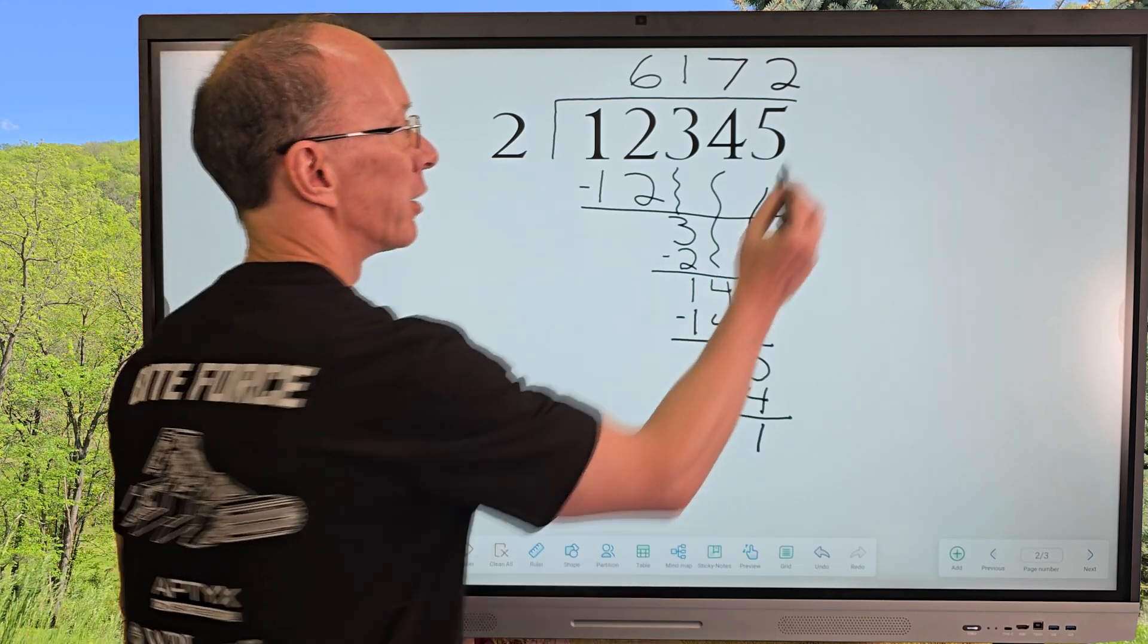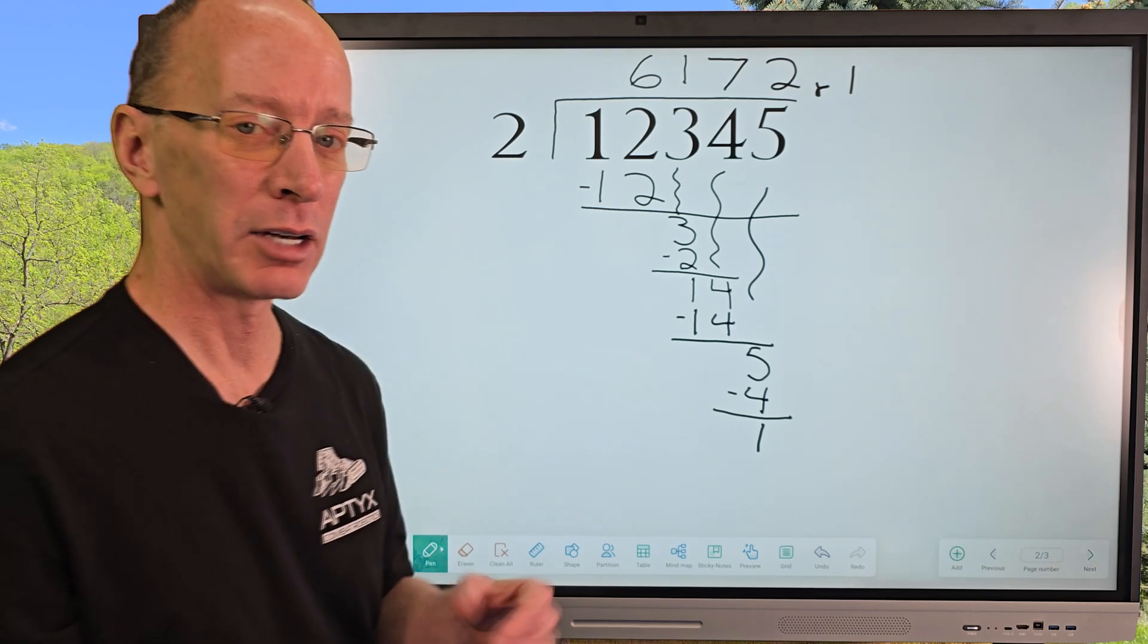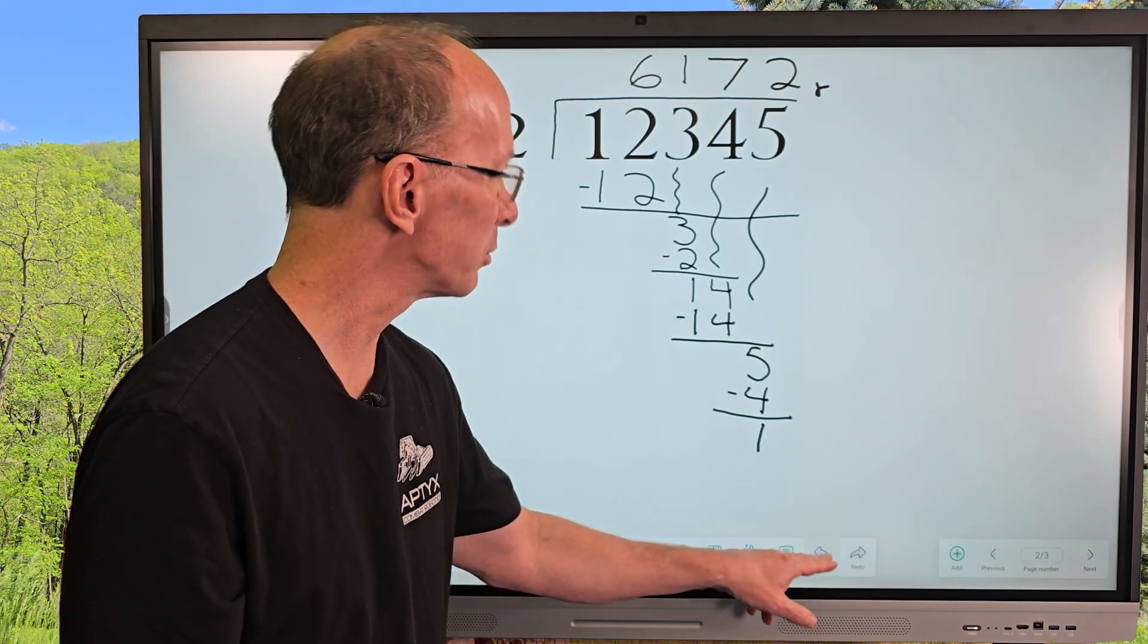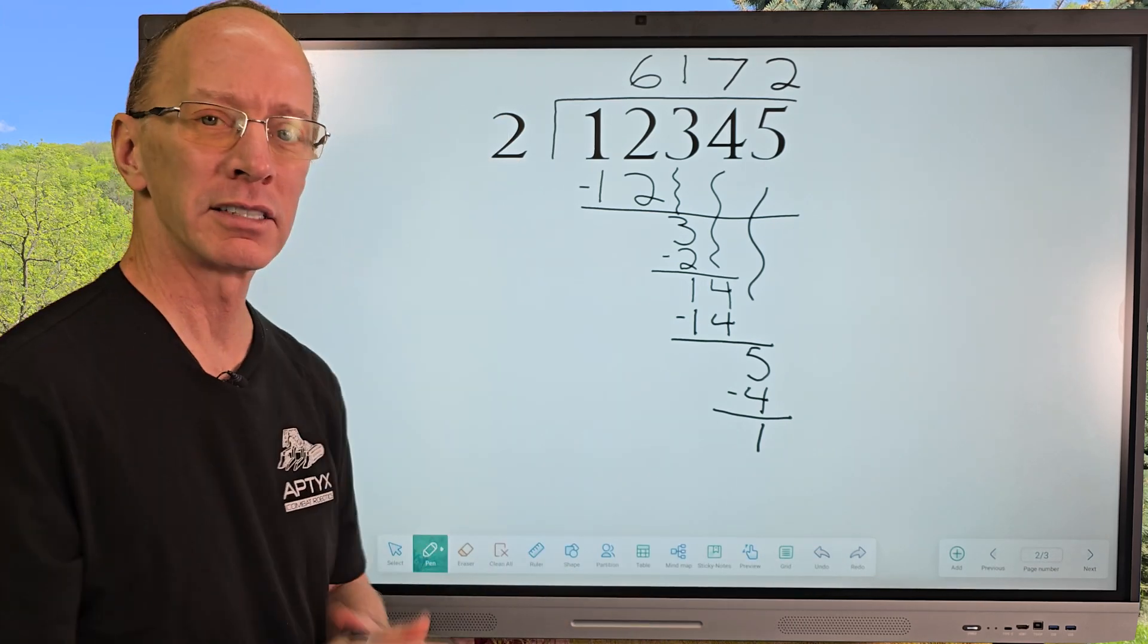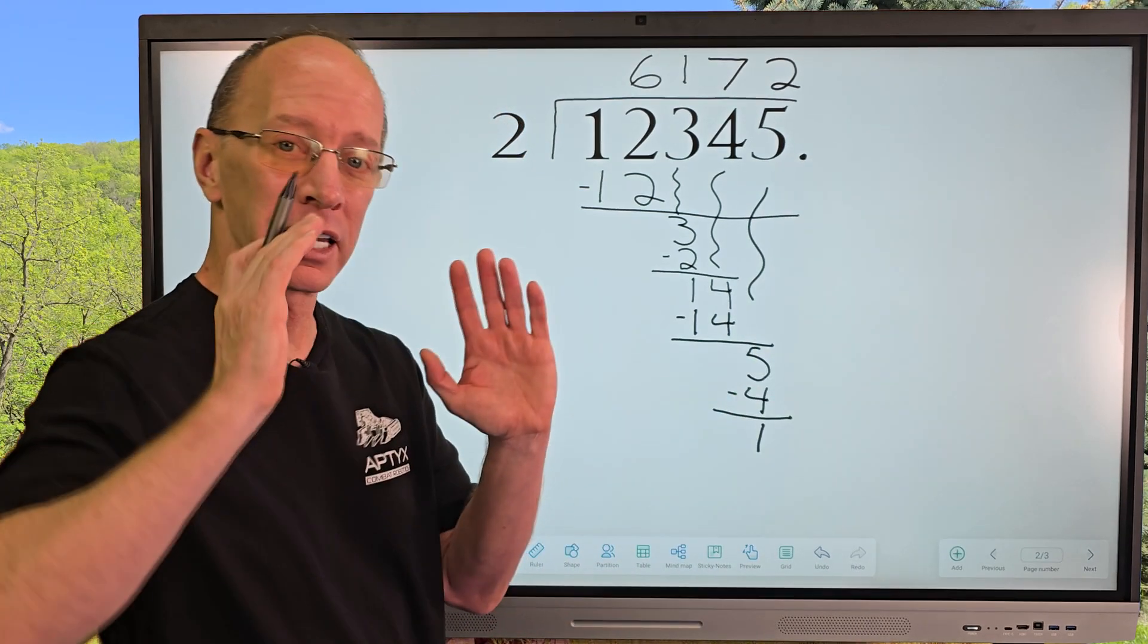Now if you're only working with remainders, this would be a remainder, remainder 1 right here. But if you need to work and you want to bring it to like a decimal number, you can just put a decimal in there. So let's go ahead and make this a decimal. I'm going to put a decimal right here.